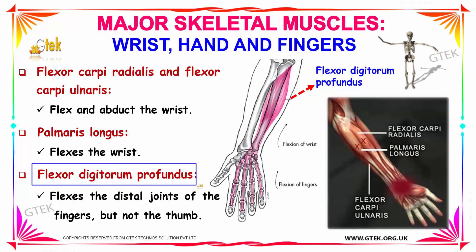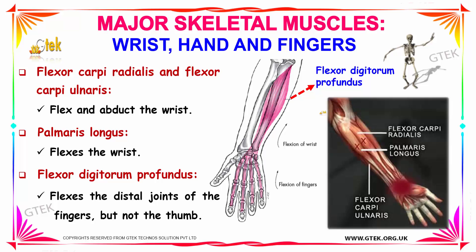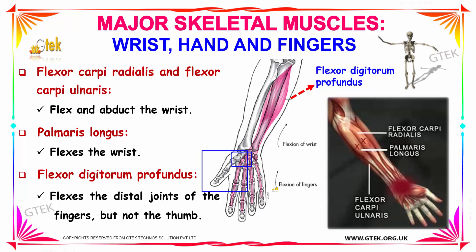Next we have the muscle flexor digitorum profundus. That muscle is located here connecting the four fingers and it flexes the distal joints of the fingers. It does not join the thumb — you can clearly see it does not have any connection with the thumb.